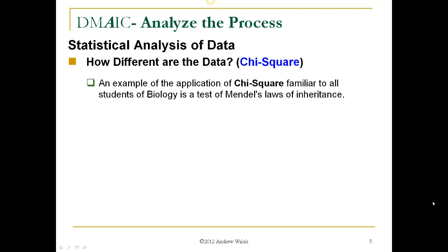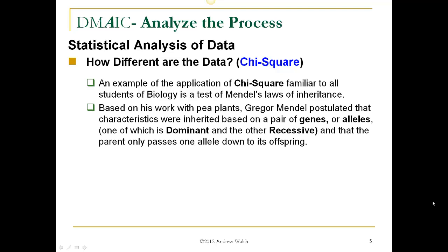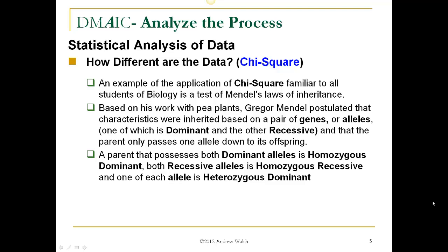An example of the application of Chi-Square familiar to all students of biology is a test of Mendel's law of inheritance. Based on his work with pea plants, Gregor Mendel postulated that characteristics were inherited based on a pair of genes or alleles, one of which is dominant and the other recessive, and that the parent only passes one allele down to its offspring. A parent that possesses both dominant alleles is homozygous dominant, both recessive alleles is homozygous recessive, and one of each is a heterozygous dominant form.